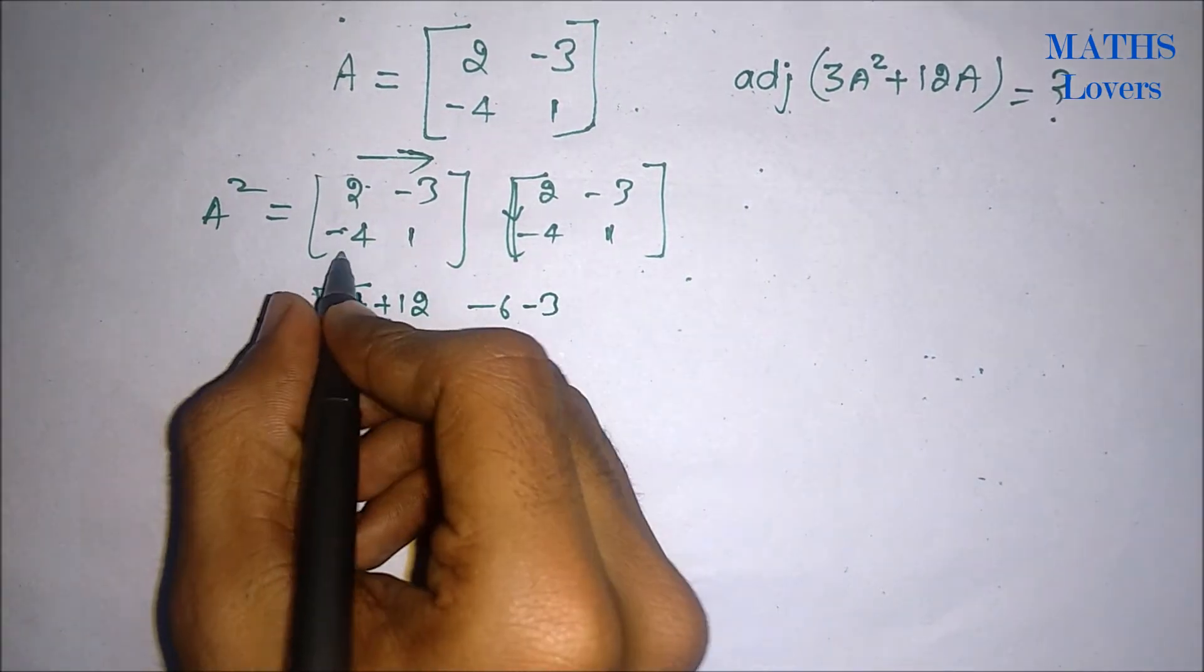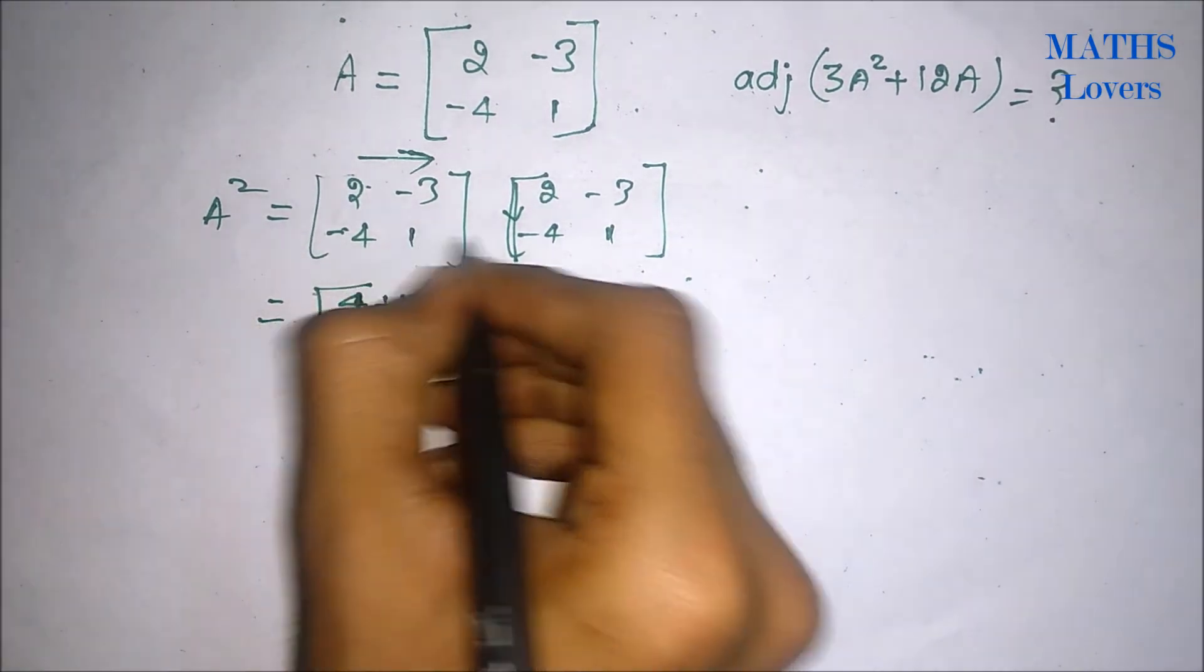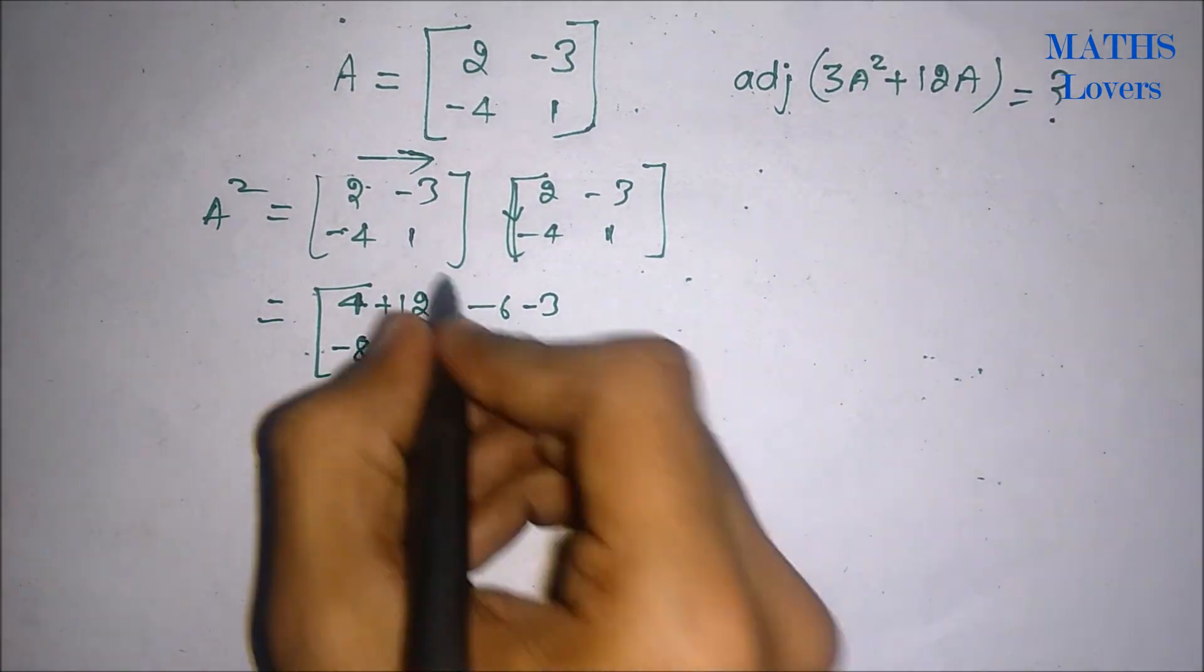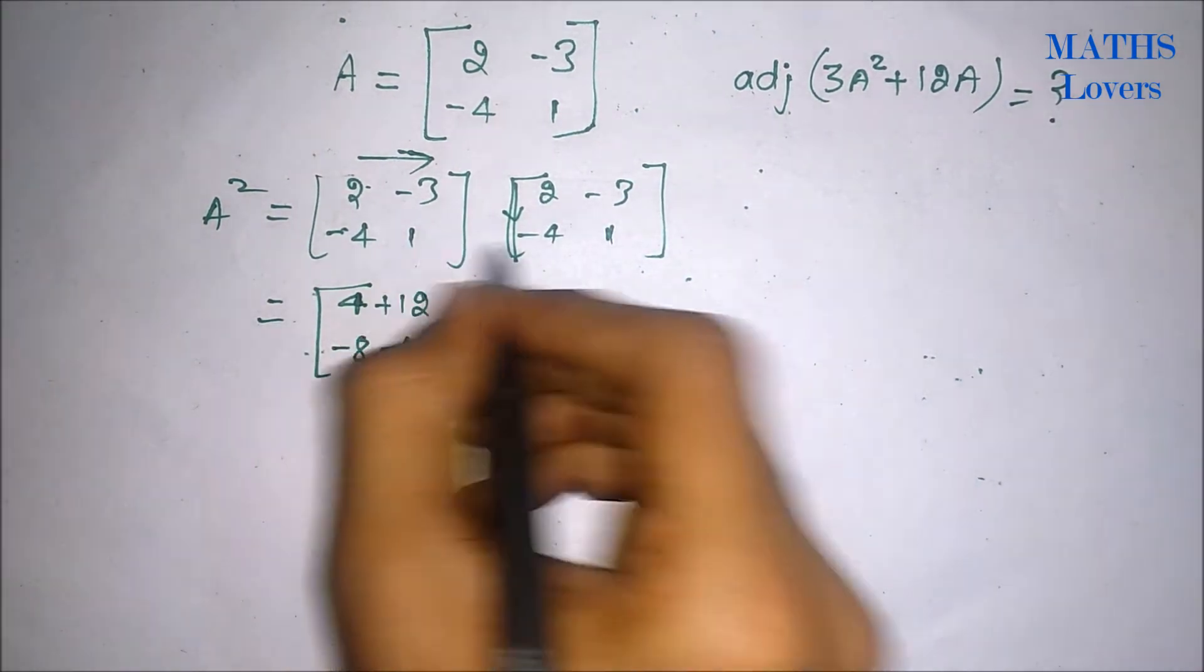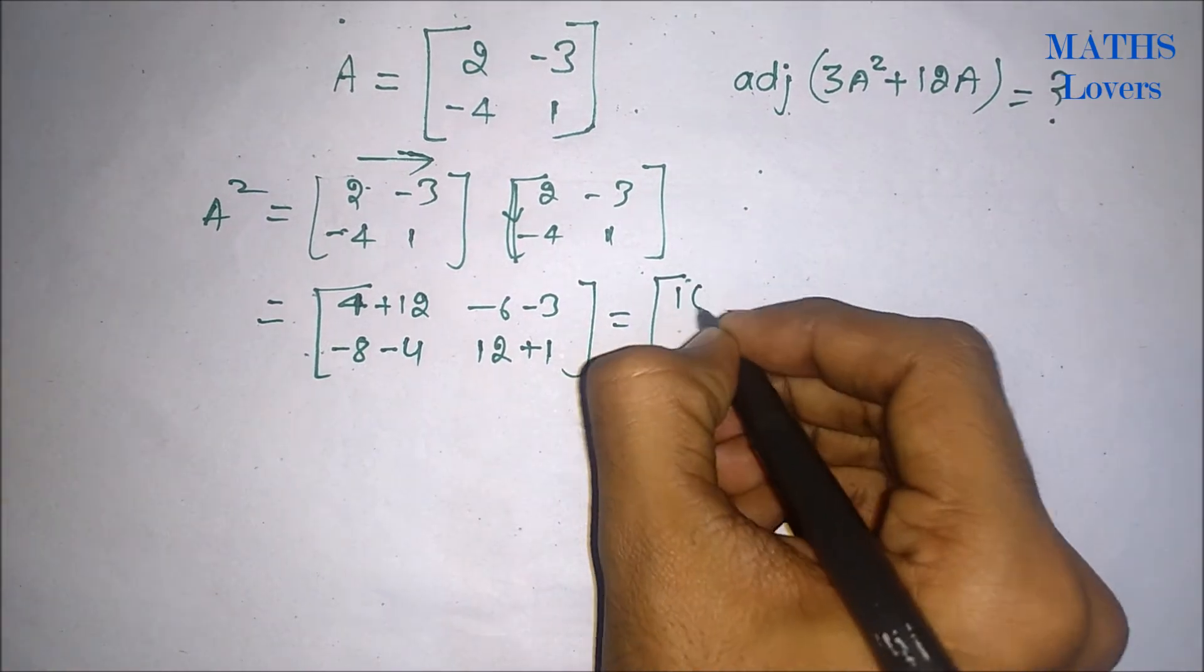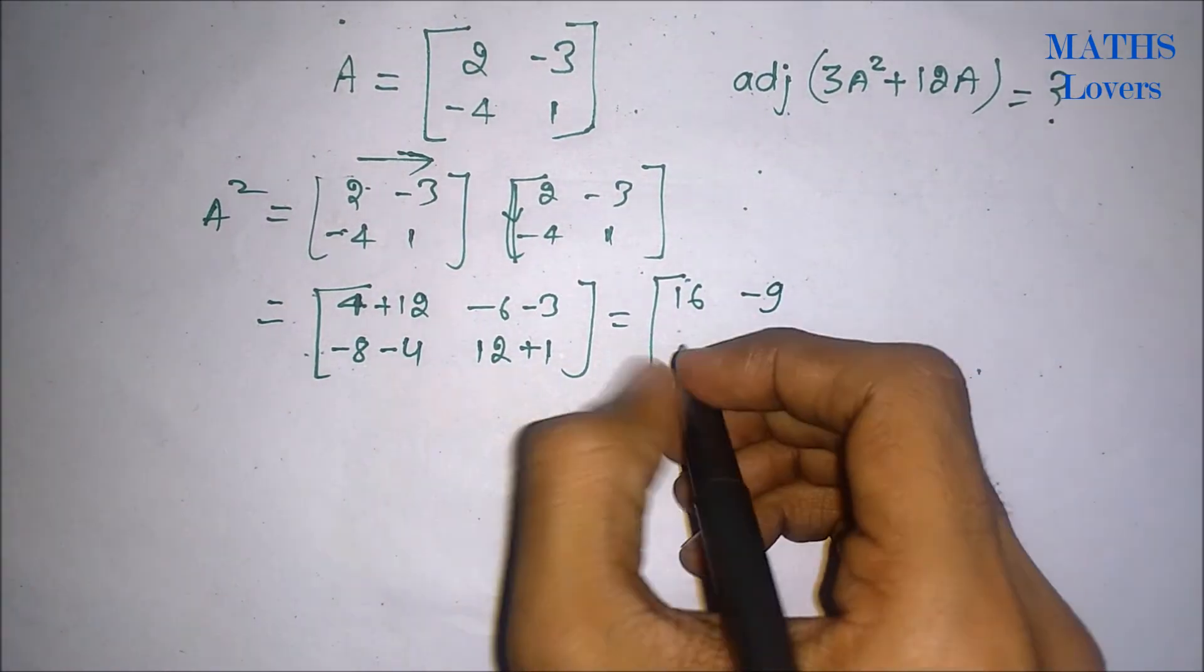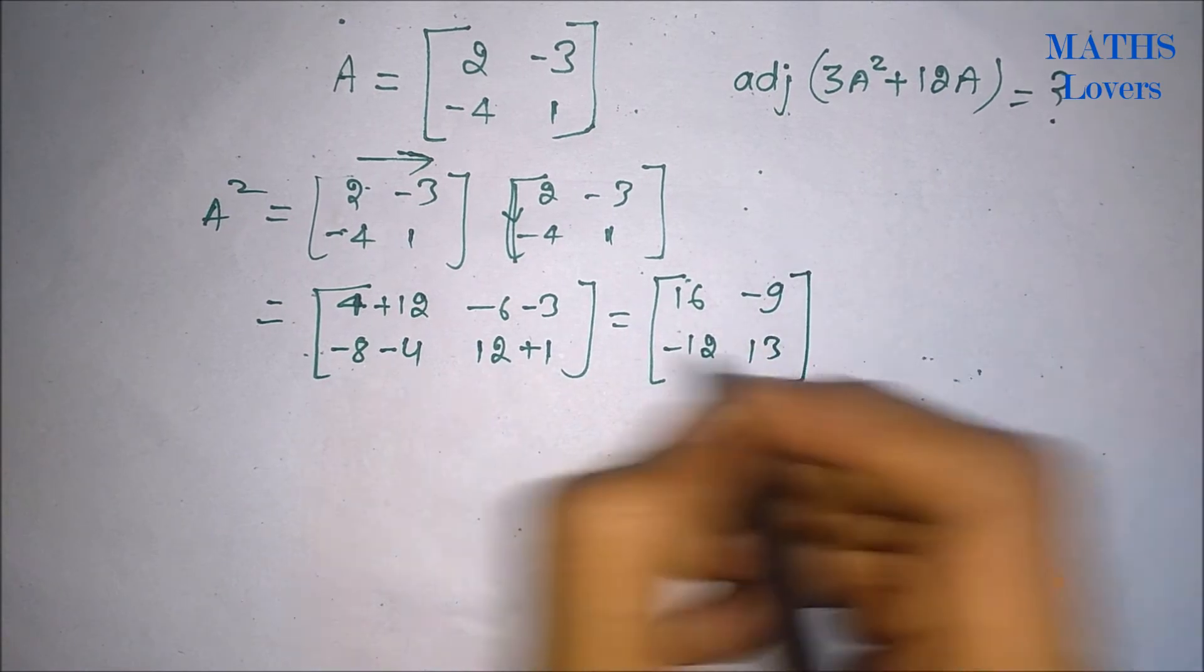Here minus 4 into 2 that will be minus 8, 1 into minus 4 that will be minus 4, and here minus 4 into minus 3 that is 12 plus 1. So here we got 16, minus 9, minus 12 and 13. So this is our A squared.